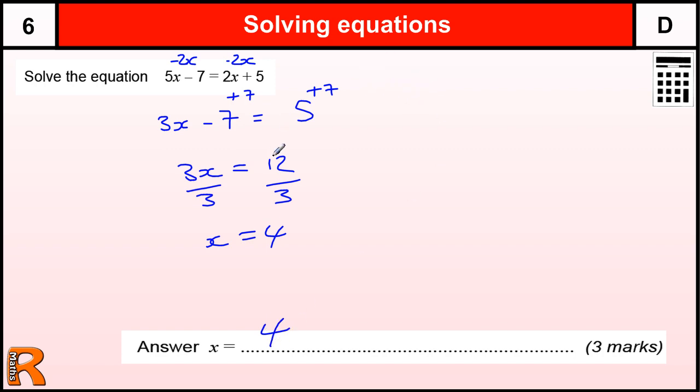There is one mark for getting to this point, one mark for having 3x equals 12, and one mark for the answer, 4.